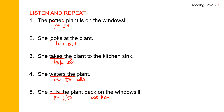Let's read the sentences one more time. The potted plant is on the windowsill. She looks at the plant. She takes the plant to the kitchen sink. She waters the plant. She puts the plant back on the windowsill.